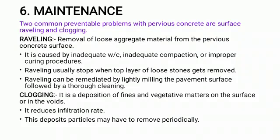Now we will see the maintenance required for pervious concrete. Raveling and clogging are the two major problems that occur in pervious concrete. Raveling is the removal of loose aggregate material from the pervious concrete surface, caused by inadequate water-to-cement ratio, inadequate compaction, or improper curing procedure. Raveling reduces the strength of pervious concrete and usually stops when the top layer of loose stones gets removed. Clogging is the deposition of fines and vegetative matter on the surface or in the voids, and it reduces the filtration rate of pervious concrete.